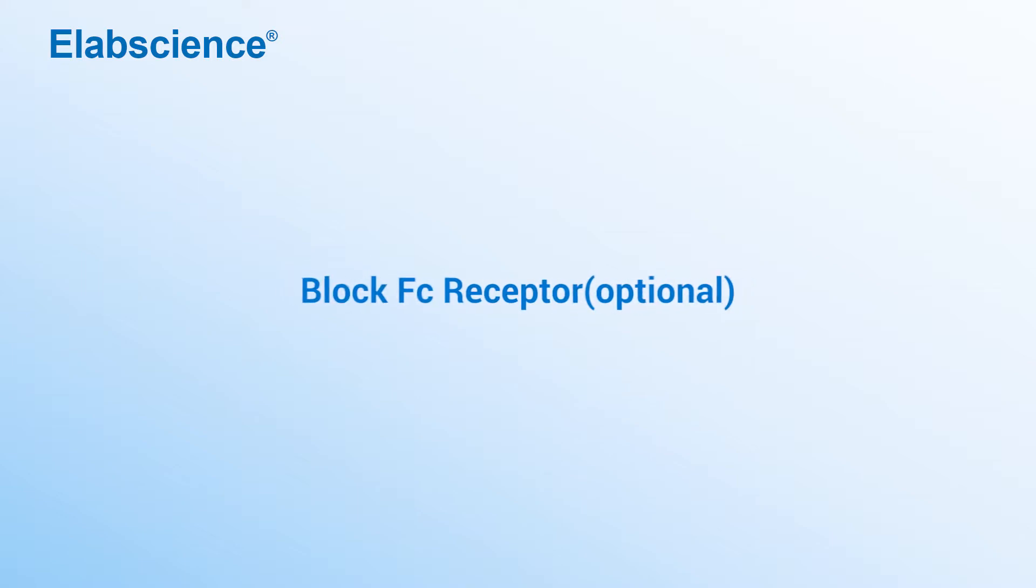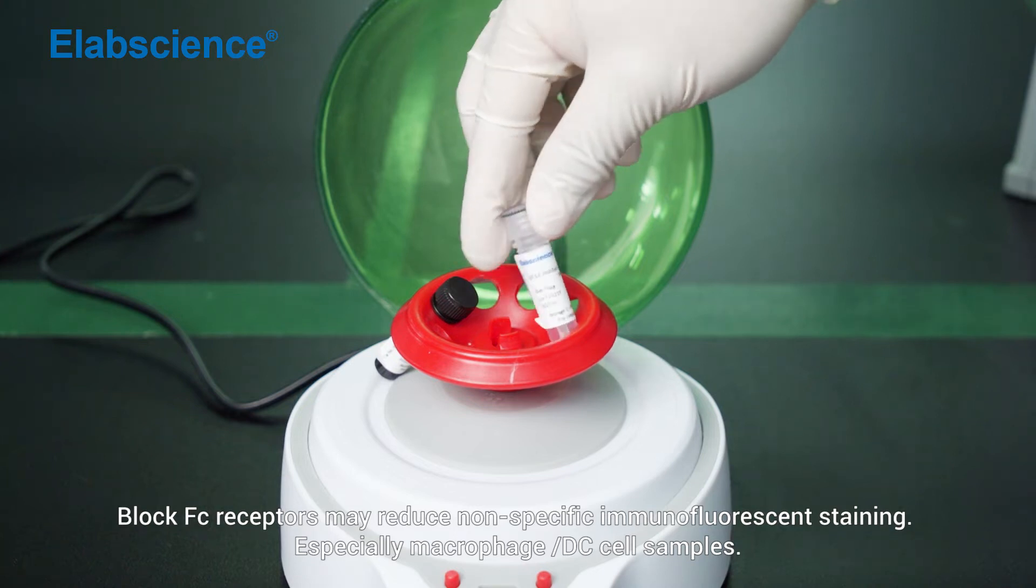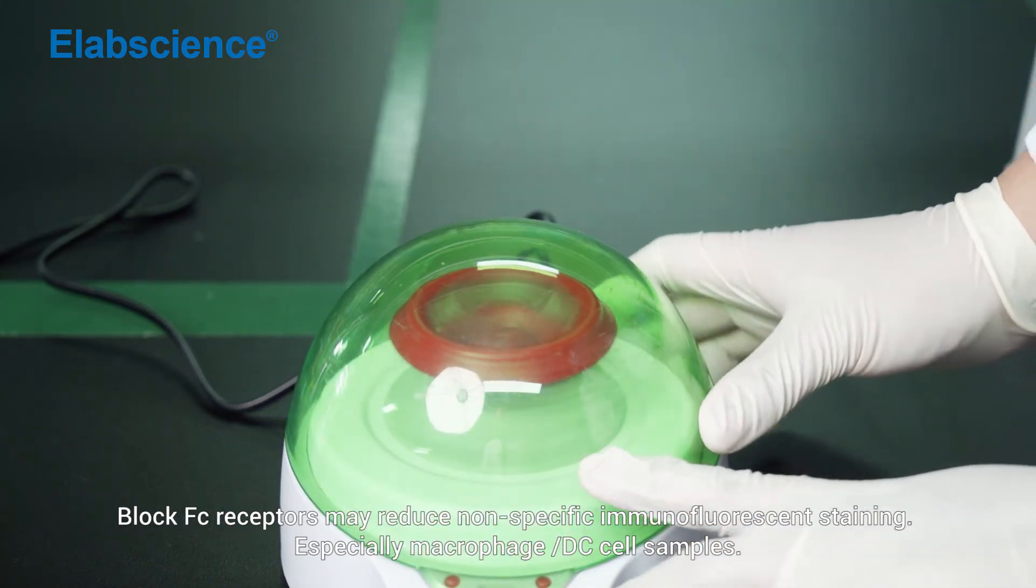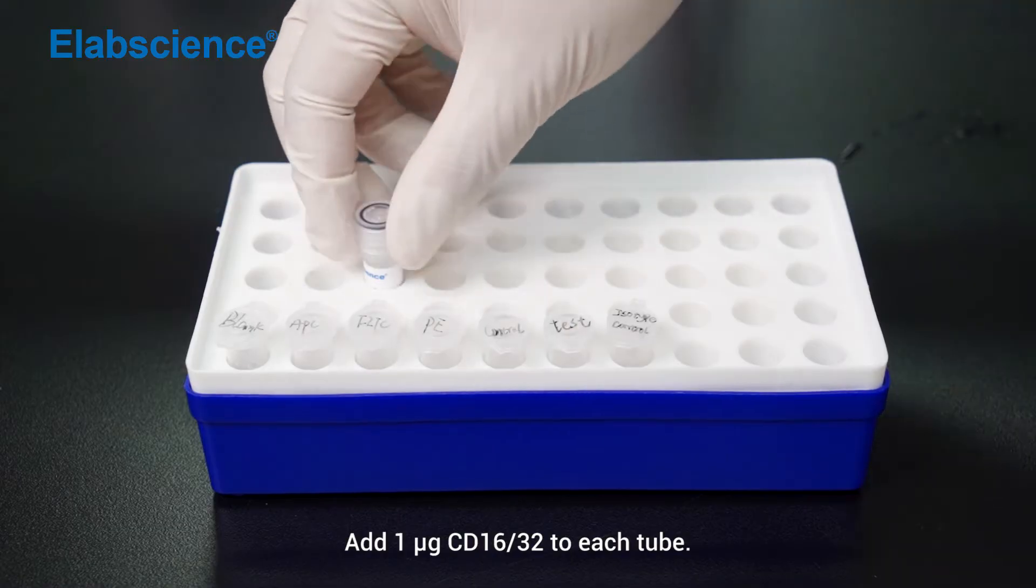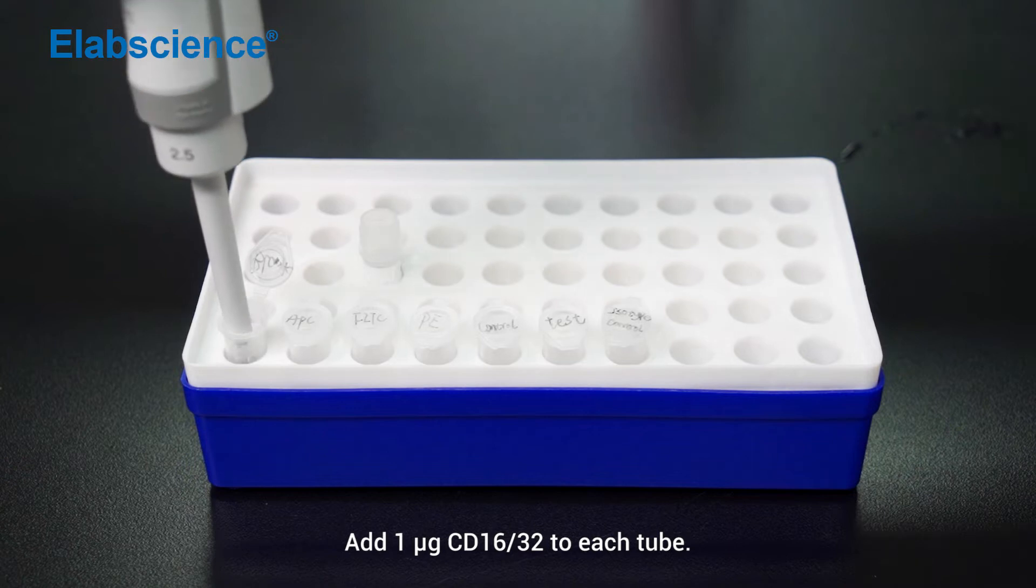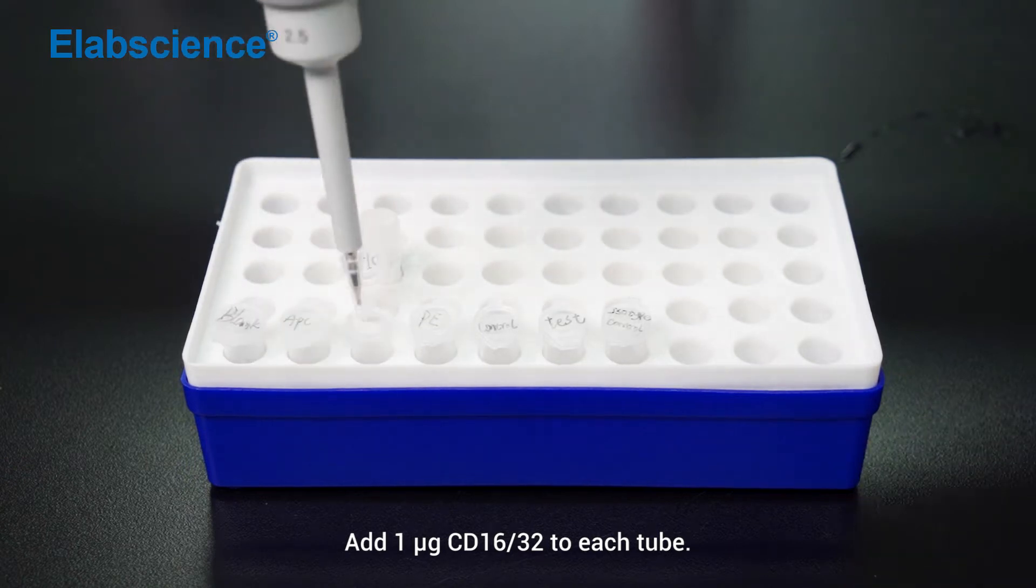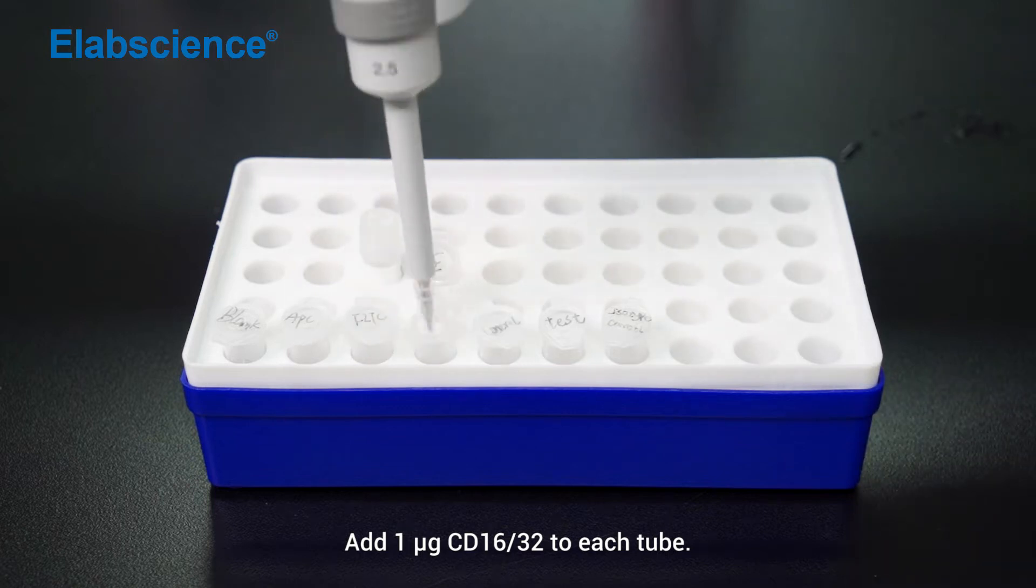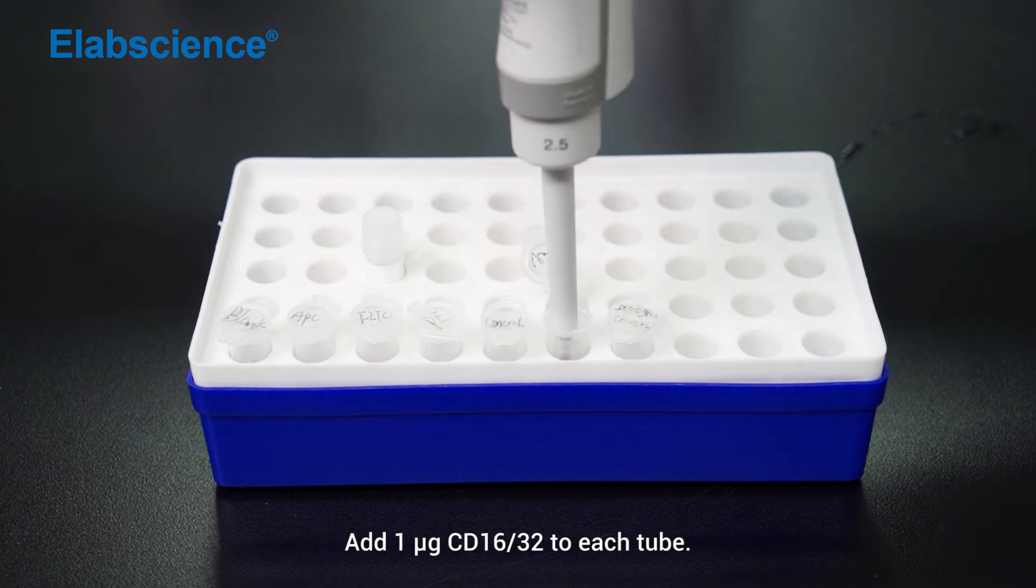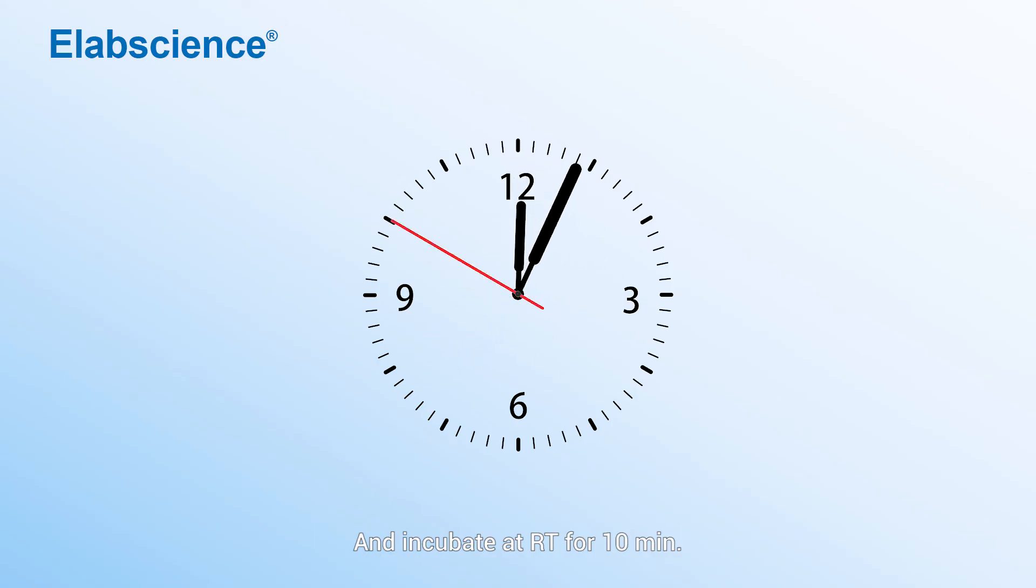Block FC receptor. Block FC receptors may reduce non-specific immunofluorescent staining, especially macrophage or DC cell samples. Add 1 µg of CD16/32 to each tube and incubate at room temperature for 10 minutes.